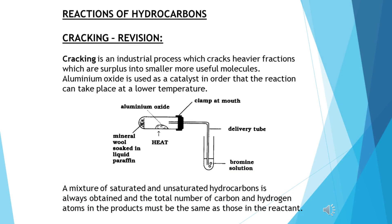A little revision: our different hydrocarbons can undergo different types of reaction. Long-chain alkanes can undergo catalytic cracking, in which the long-chain alkane is cracked into smaller, more useful alkanes and alkenes — that is, saturated and unsaturated hydrocarbons. Two important points to remember about this experiment are: one, the name of the catalyst, and two, how to avoid suck back.